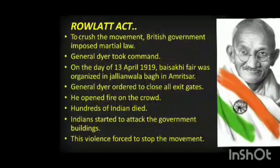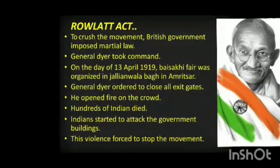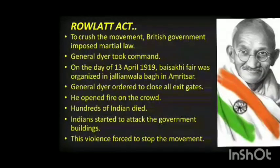To crush the movement against the Rowlatt Act, the British government imposed martial law. General Dyer took command. On 13th April 1919, a Baisakhi fair was organized in Jallianwala Bagh in Amritsar. The innocent people were not aware of the martial law and were attending a peaceful meeting. General Dyer ordered all exit gates closed and opened fire on the crowd. Hundreds of Indians died. Indians started to attack government buildings, and this violence forced the movement to stop.